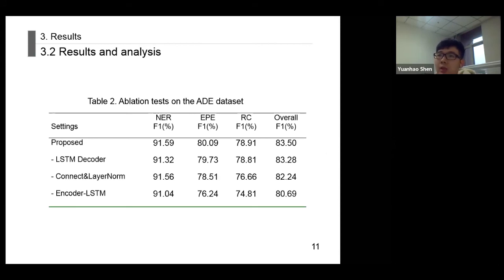We conducted ablation tests on the ADE dataset reported in Table 2 to analyze the effectiveness of components in the model. The performance of EPE and RC modules decreases when we remove the connect layer normal layer of the RC module and only use the predicted subject-object labels and the sentence encoding as inputs for the RC task. This shows that the predicted entity labels and the word embedding provide meaningful information for the RC component, and this approach can solve the problem of information loss between subtasks.